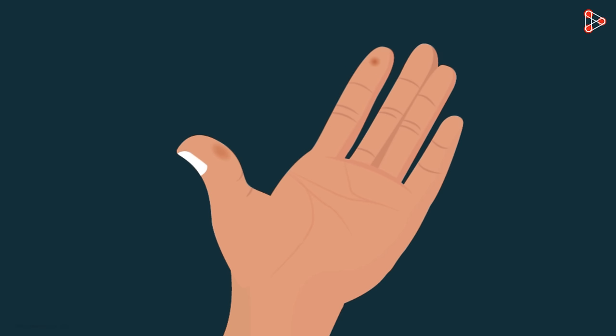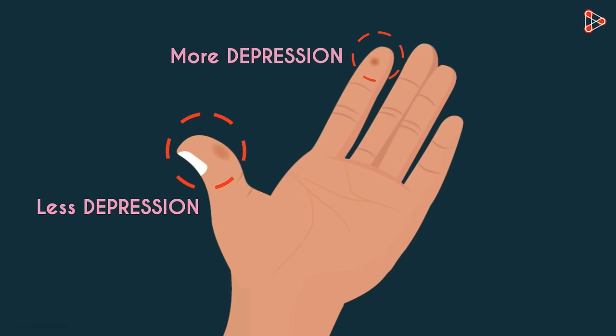Release the pencil and observe the two fingers. To be precise, observe the depression you see in the fingers. You'll notice that the depression in your index finger is much more as compared to the depression in your thumb. Why does that happen?